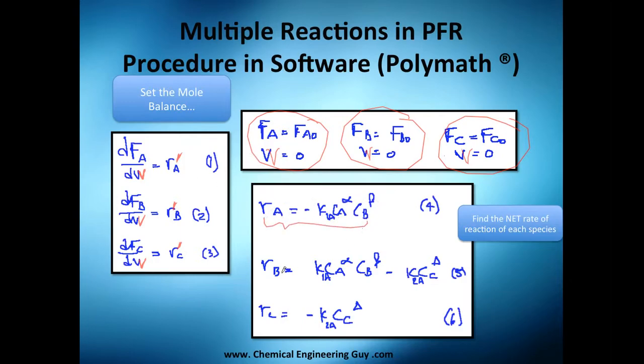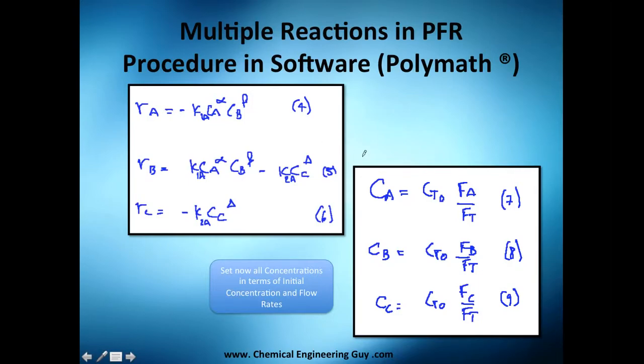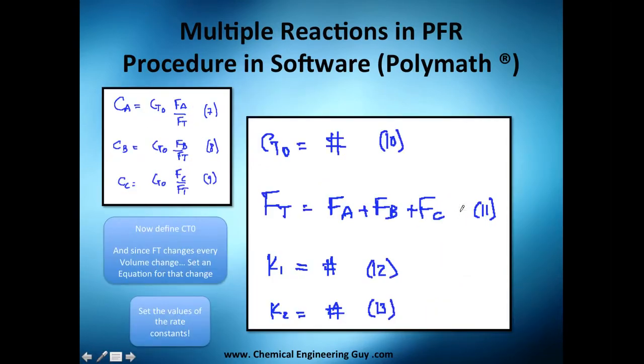Once again, we're going to use the rate of reactions. Please be sure to get the net rate of reactions of A, B, and C. And since of course we're doing a gas phase, we cannot let this alone. So we need to substitute the concentration term, which is initial concentration times the flow rate at that specific W, which is from zero to final W, and the total flow rate. Now once we set that, we're going to need to set this equation. Once again, the total flow rate, because the flow rate changes with respect to mass of catalyst.